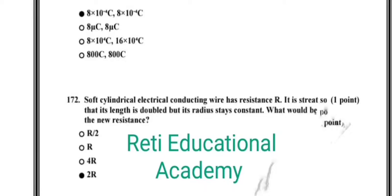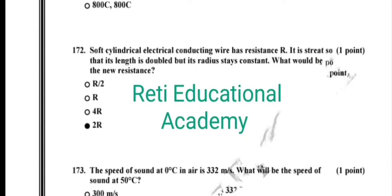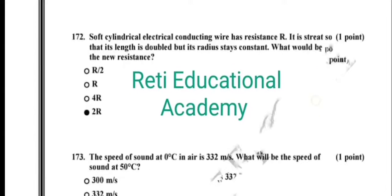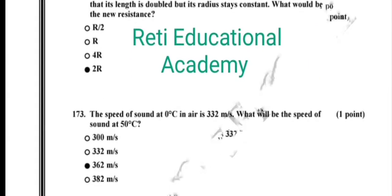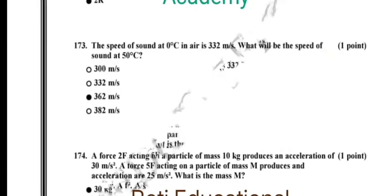Question number 172: a soft cylindrical conducting wire has resistance R; it is stretched so that its length is doubled but its radius stays constant; what would be the new resistance? The correct option is 2R. Question number 173: the speed of sound at 0°C in air is 332 meters per second; what will be the speed of sound at 50°C? The correct option is 362 meters per second.